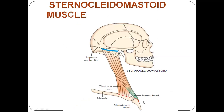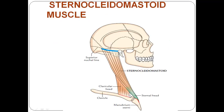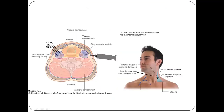This picture taken from Ishram Singh shows the sternal head, clavicular head, insertion at the mastoid process and the superior nuchal line. The lesser supraclavicular fossa is a small triangular gap between the sternal and clavicular heads, above the sternoclavicular joint. It contains the terminal part of the internal jugular vein, which can be entered by needle or catheter.